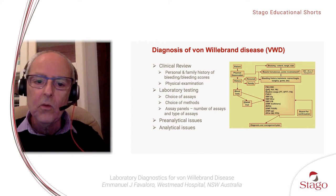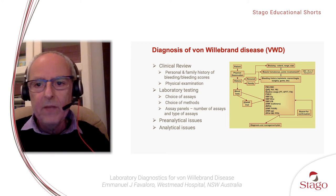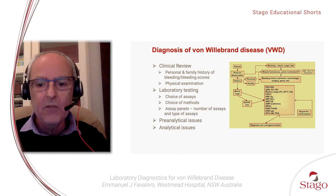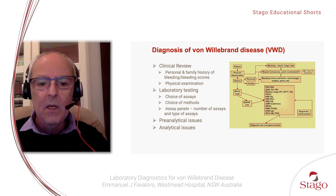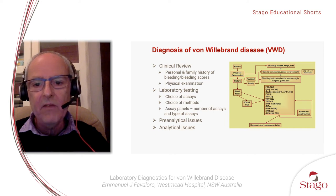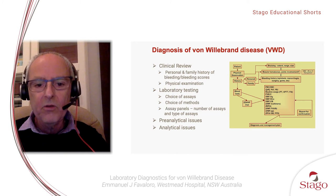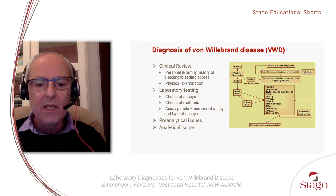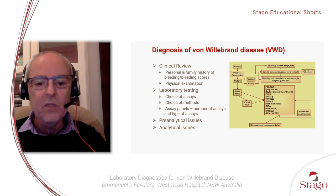In this third main slide, I will talk briefly about the diagnosis of von Willebrand's disease in terms of the components of the diagnosis. We undertake for patients, firstly, a clinical review where we assess the patient's personal and family history of bleeding, using either a clinical history or bleeding scores. The clinician undertakes a physical examination, and then if the patient is characterised as potentially having a bleeding disorder, laboratory testing may ensue. Here, what's important is the choice of assays, the choice of methods, and the assay panels — including the number and type of assays. It's also important to consider not only analytical but also pre-analytical issues.